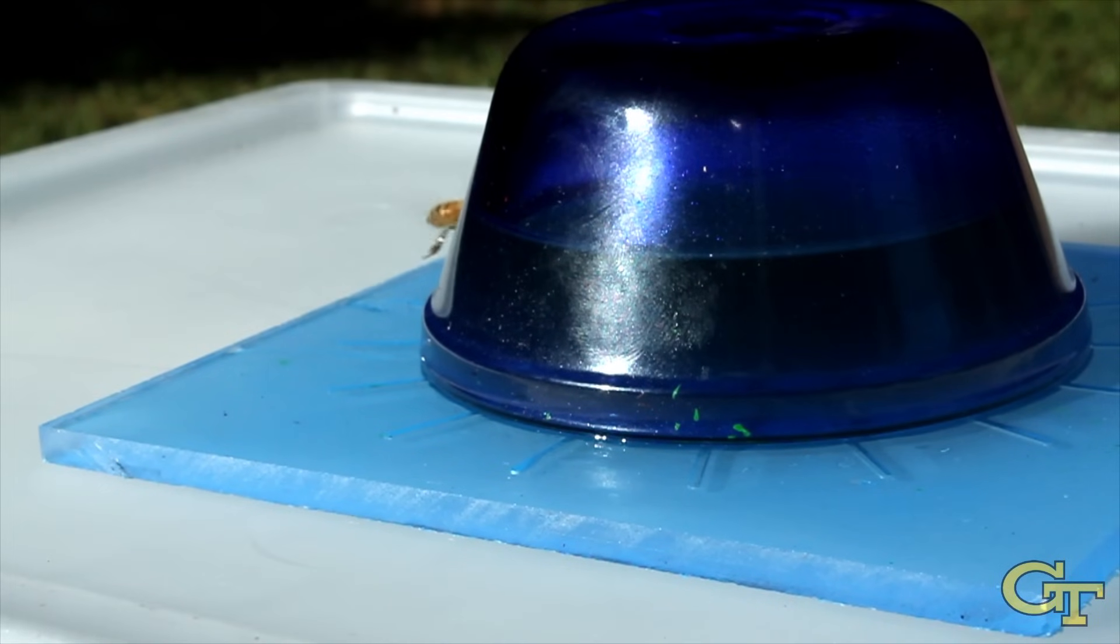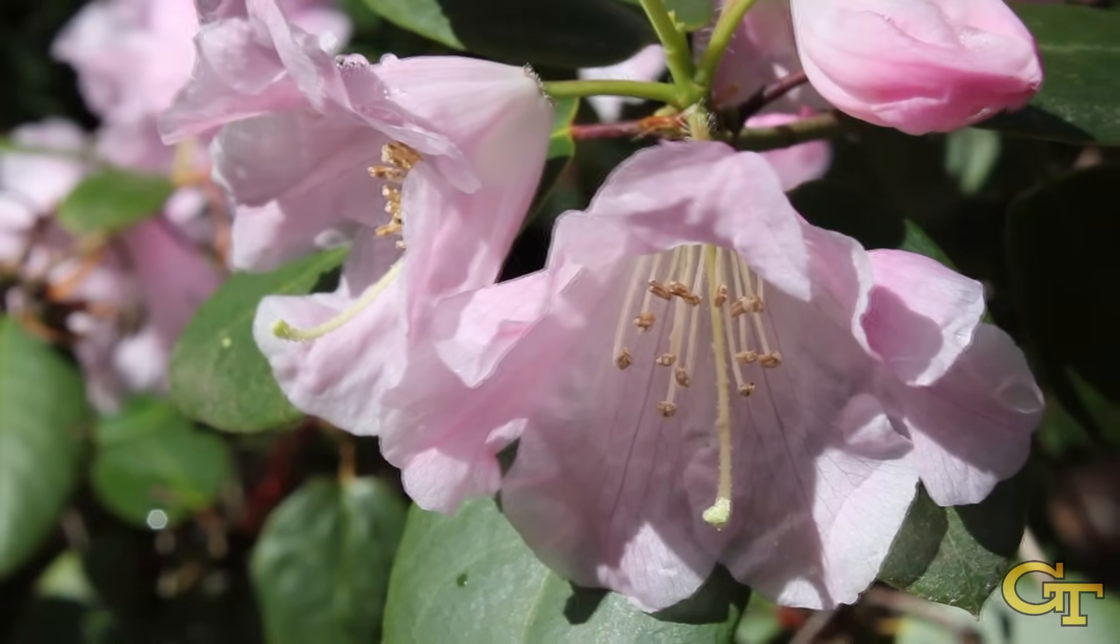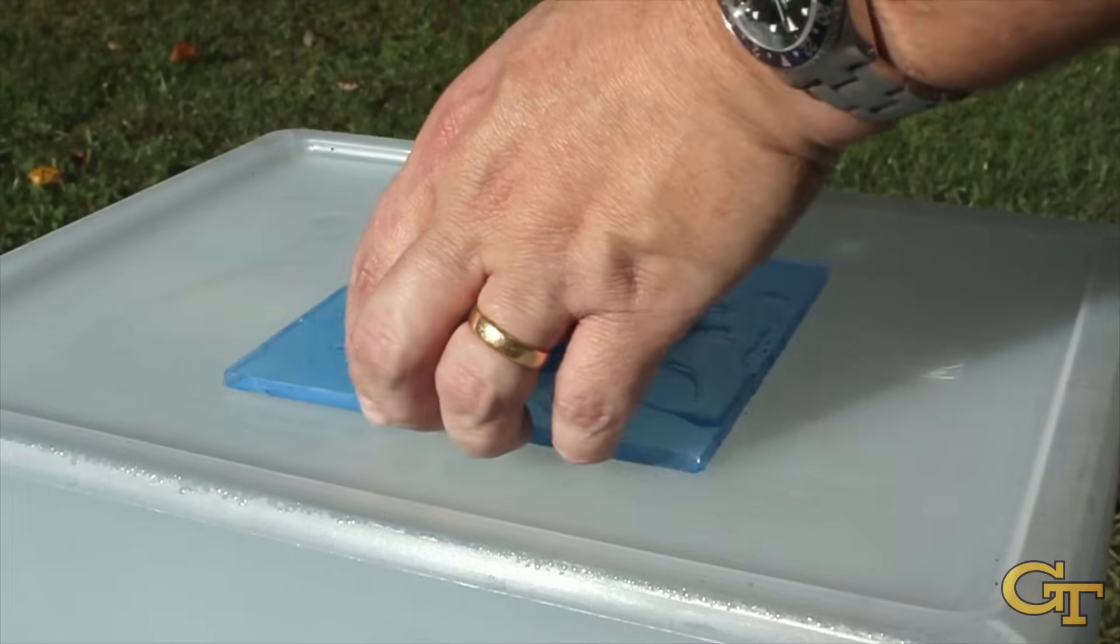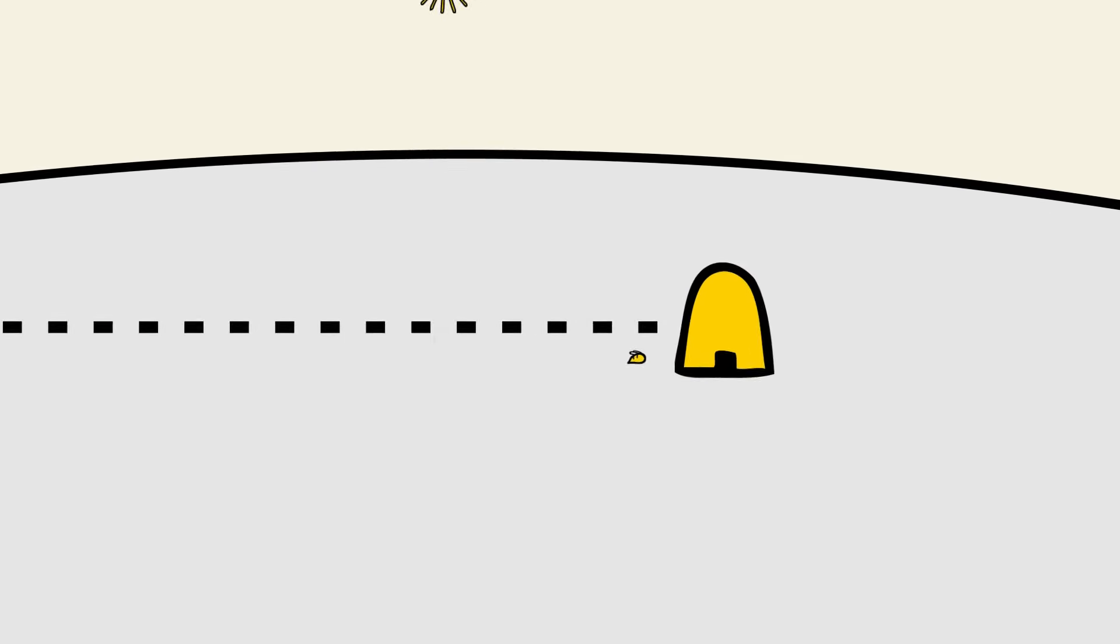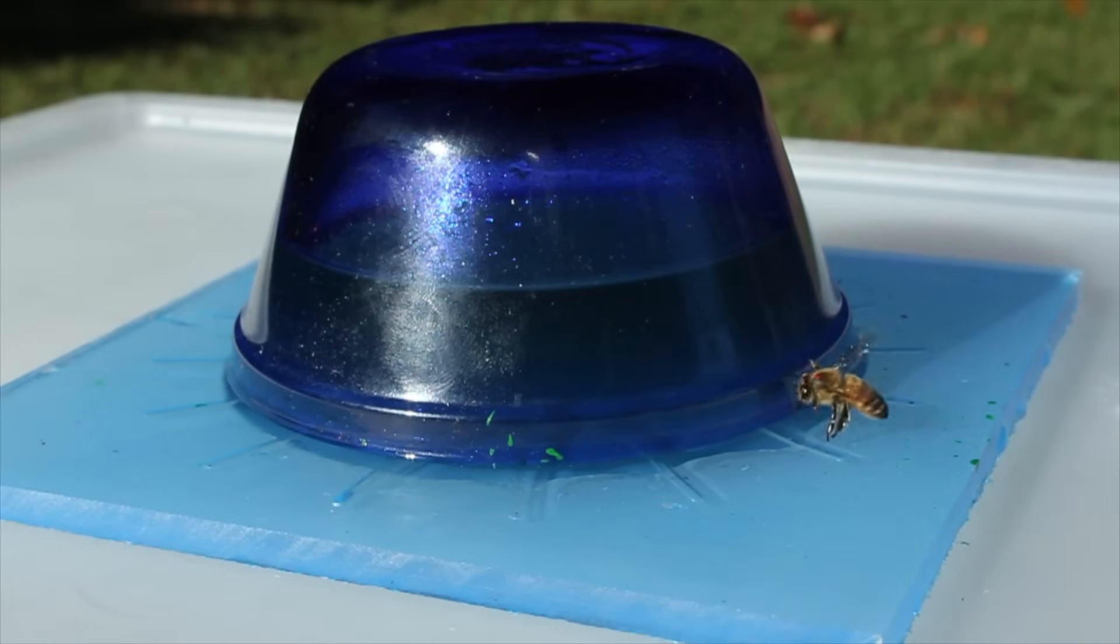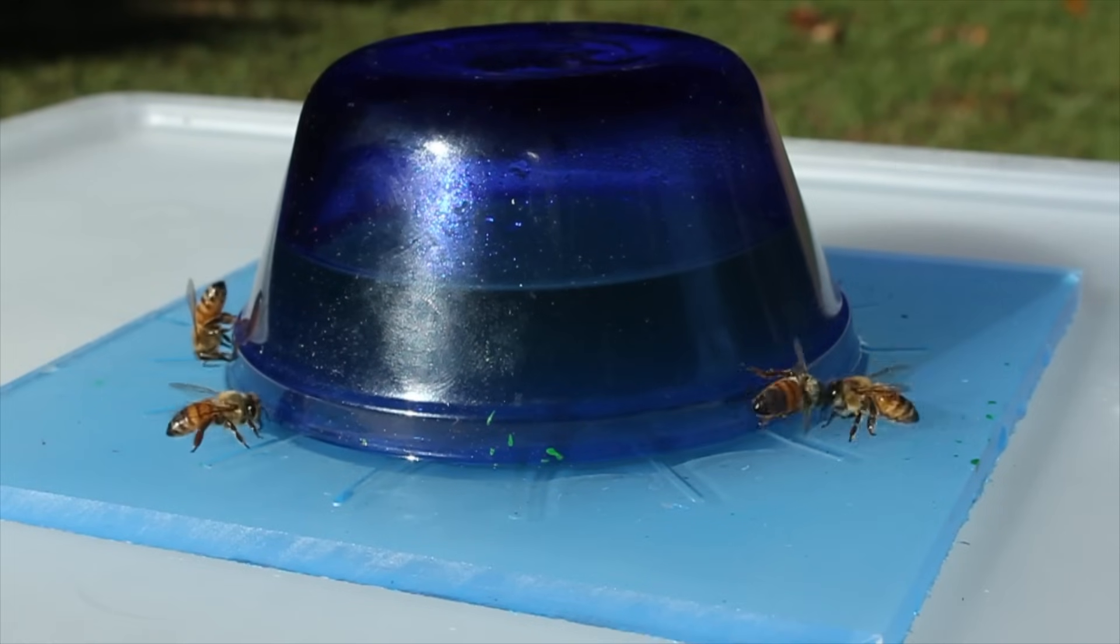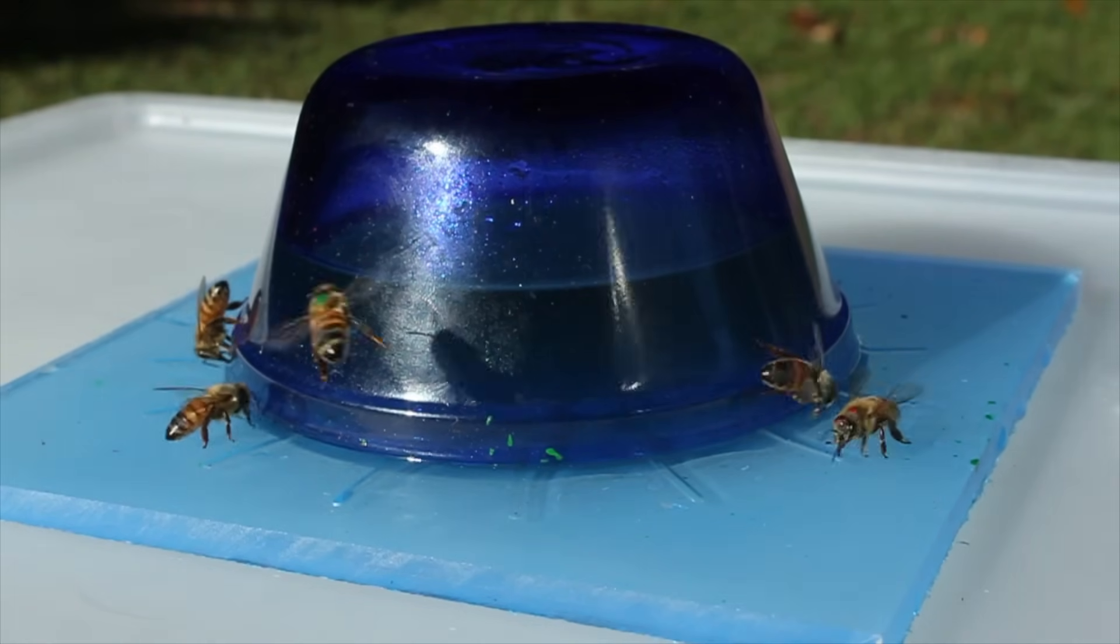A foraging honeybee will eventually discover a new food source, such as a freshly blooming flower or artificial feeder placed by a scientist. After this visit, an interesting thing happens. Over the next few minutes, many other bees arrive at the same location. They don't travel as a group. Instead, each bee finds the food source individually.